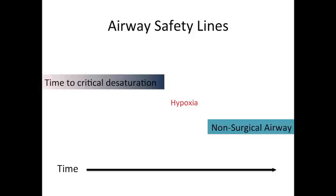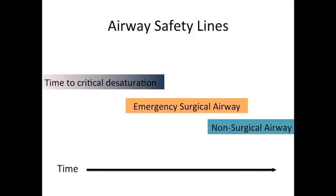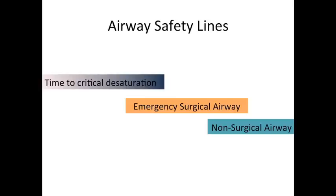To avoid this, an emergency surgical airway is required to bridge the gap in the airway safety lines. Therefore, there are three separate, interrelated and equally important aspects to the safe care of the patient with a difficult airway: maximising the time to critical desaturation, efficiently establishing a non-surgical airway as early as possible, and recognising the need for and having the ability to efficiently perform an emergency surgical airway where required.